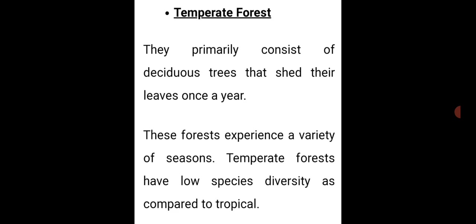Temperate forests primarily consist of deciduous trees that shed their leaves once a year. They are located in moist temperate places with sufficient rainfall, where summers and winters are clearly defined. Temperate evergreen forests have quite a few trees, with mosses and ferns making up for them. Trees have developed spiked leaves in order to minimize transpiration.